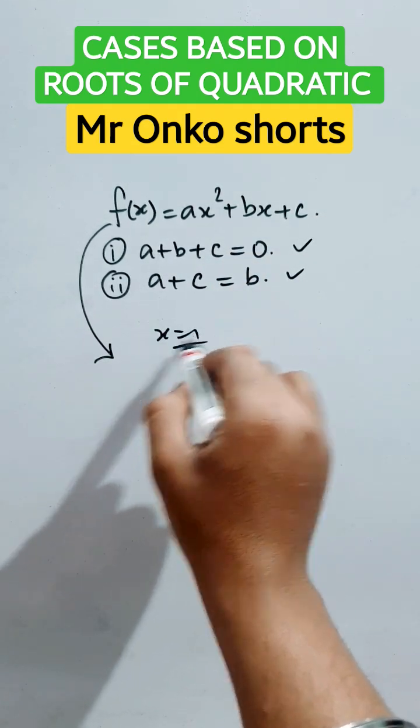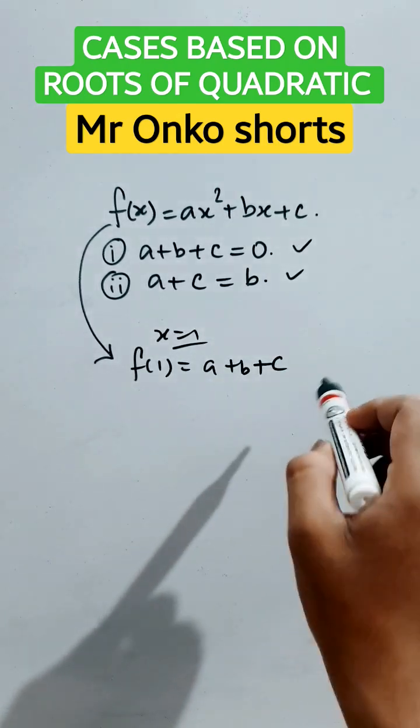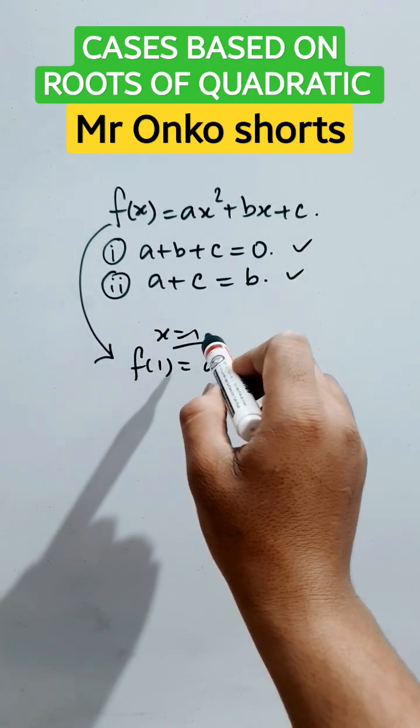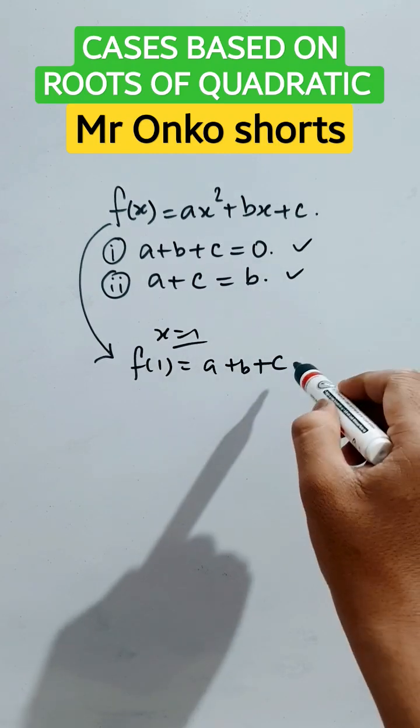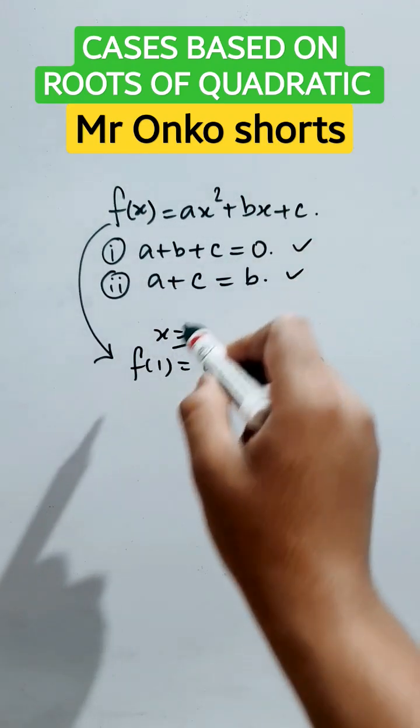So, first of all, if we put x equals to one, we will get f of one is equals to a plus b plus c. Now, if x equals to one is the root of the given equation, then this becomes zero. So, in this case, x is equals to one.